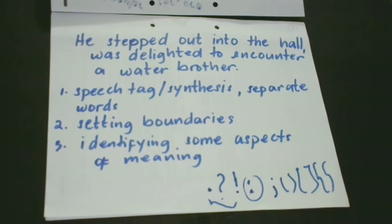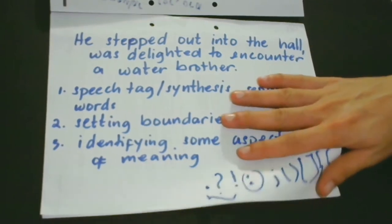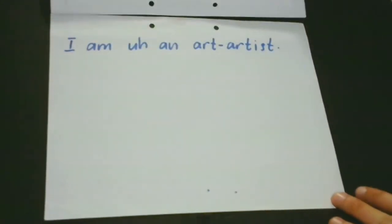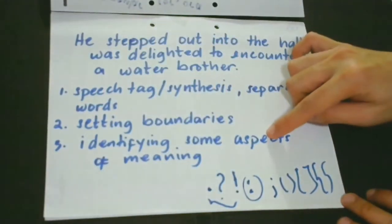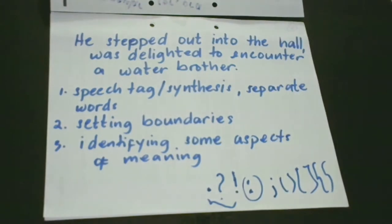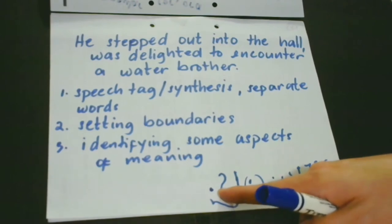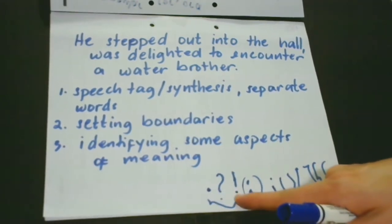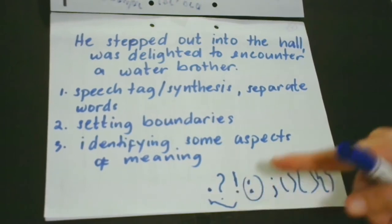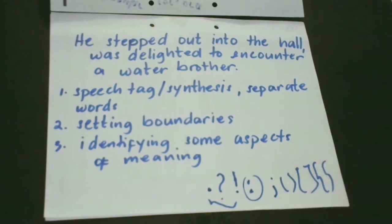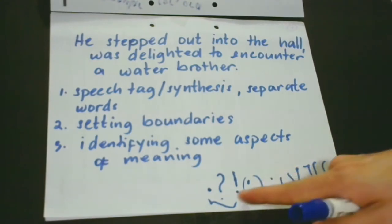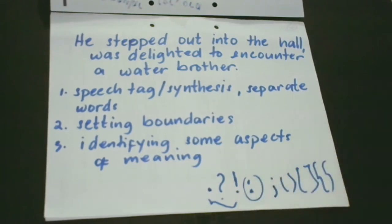The third case is you use punctuation marks to identify some aspects of meaning. For example, we use a question mark to show that we are asking. We use an exclamation point to describe or express our emotion — like we are surprised, sad, or afraid. There are actually more emotions and feelings that we can use this to express. I suggest you review them.